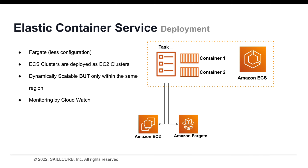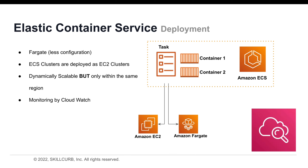ECS can scale up and down dynamically, but only within the same region, because Amazon ECS is region based. It may span several availability zones, but not different regions. This is important to keep in mind. Monitoring is handled via AWS CloudWatch, which keeps track of metrics for your containers and cluster.